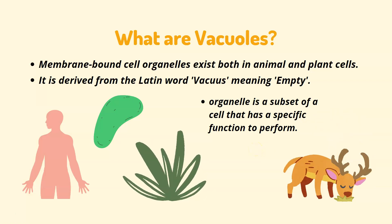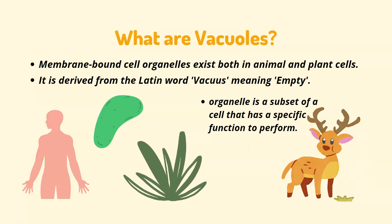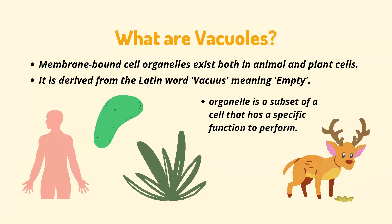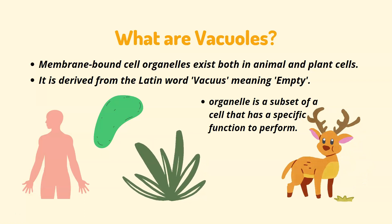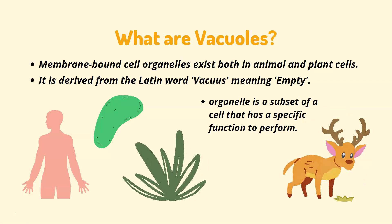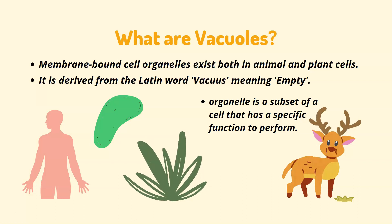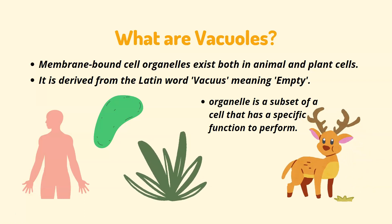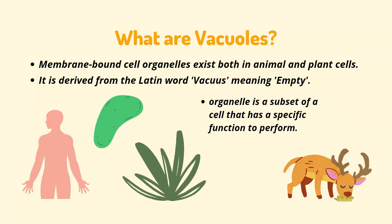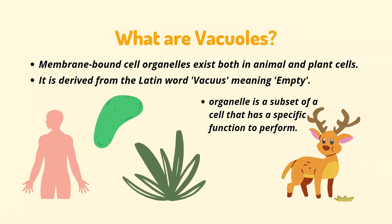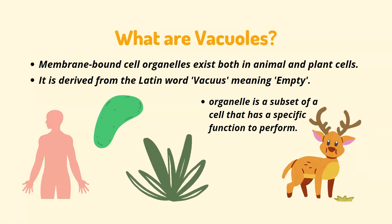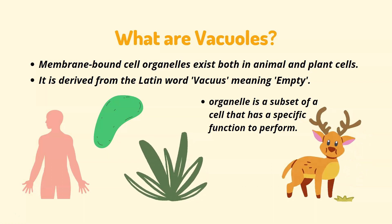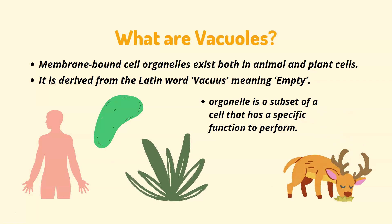For example, the heart has a function to circulate oxygenated blood throughout our body, while the kidneys filter out waste from our body. Similarly, we have other organs that are specialized to perform specific functions. In the same way, within a cell we have different subunits called organelles that perform specific functions, and vacuoles are one of them.